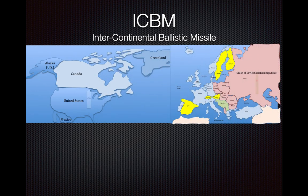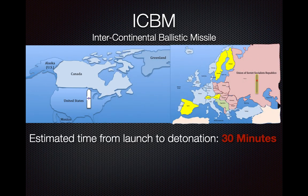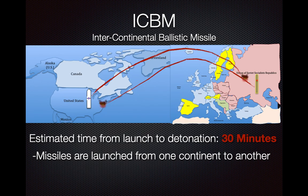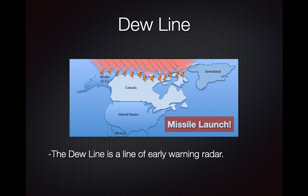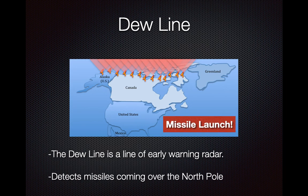An ICBM is an intercontinental ballistic missile. The fastest missiles known today travel at around 15,880 miles per hour. The estimated time from launch to detonation — from the Soviet Union to the United States and vice versa — is 30 minutes. Missiles are launched from one continent to another and may carry multiple warheads to shower a target. The DEW line is an early warning radar system across Alaska and Canada that would detect a missile launch coming over the North Pole.